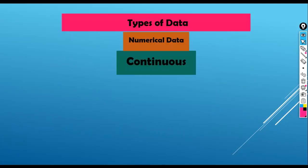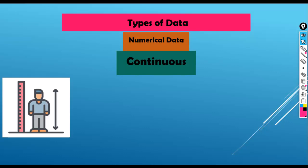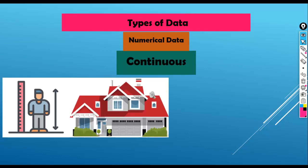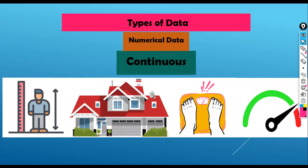Now, continuous data. Continuous data is a type of numerical data that can take any value within a certain range. Continuous data includes a person's height, the price of a house, a person's width, and the speed of a car. These are continuous data that can take any value within a certain range.